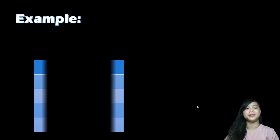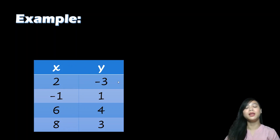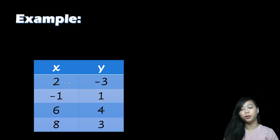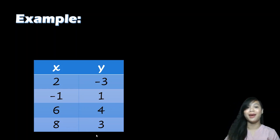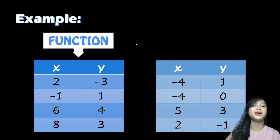Let us have examples. In the first table, we have x values and y values. The x values are 2, negative 1, 6, and 8. Each x value has a corresponding y value: for 2 we have negative 3, for negative 1 we have 1, for 6 we have 4, and for 8 we have 3. This table is an example of a function.